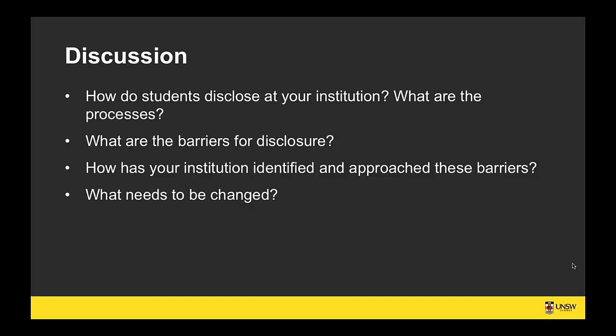The two-pronged approach looks at how universities encourage and support the process of disclosure by students, and also how we can make that experience easier and more productive for those students who do feel the value and wish to disclose. This is all about students, not about staff at this point.